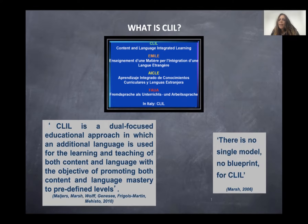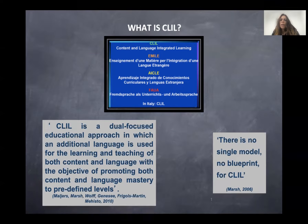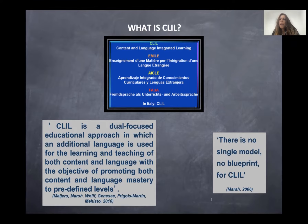So what is CLIL? CLIL stands for Content and Language Integrated Learning, but the focus is on plurilingualism, so not only on English. As you can see, there are other acronyms in other languages like EMIL, ICLE and EMILE. CLIL is a dual-focused educational approach in which an additional language is used for the learning and teaching of both content and language.